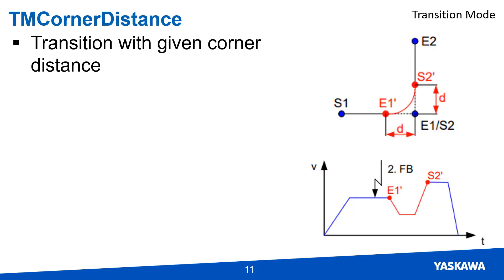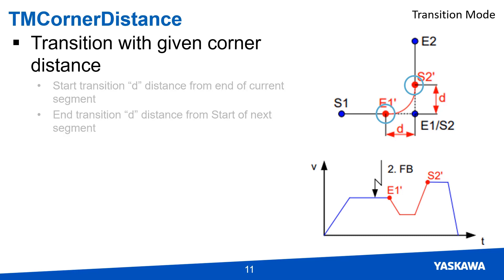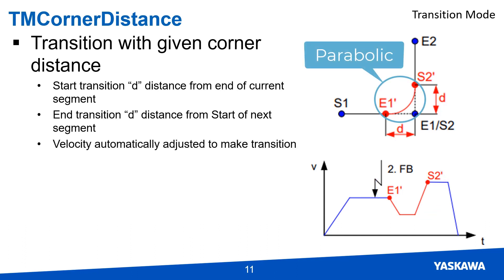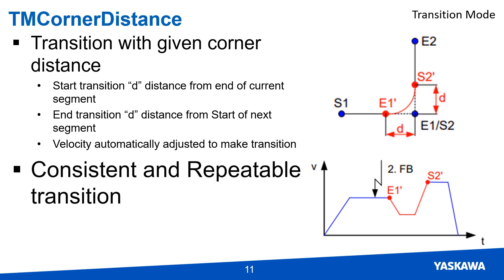The TM Corner Distance transition mode doesn't look at velocity when determining how to transition. Instead, it defines two transition points that are d-distance from the corner created by the two segments. The velocity is automatically adjusted so that a parabolic transition is produced between the two defined points, providing a consistent and repeatable transition.